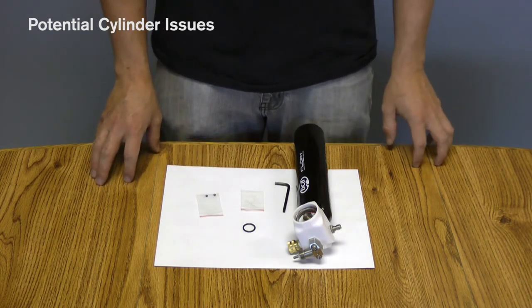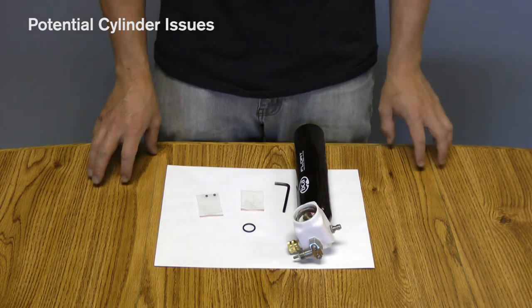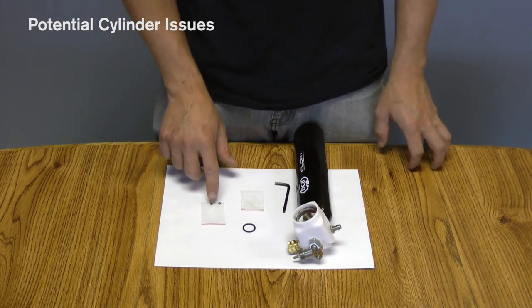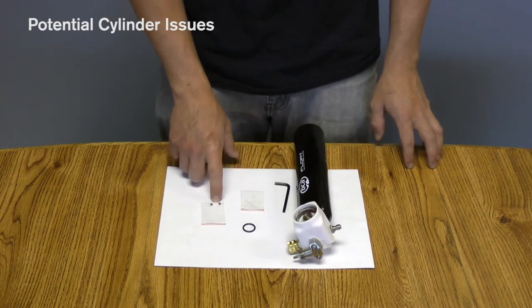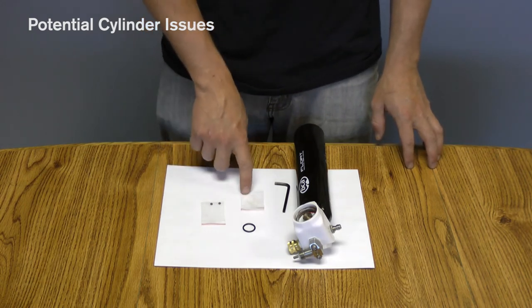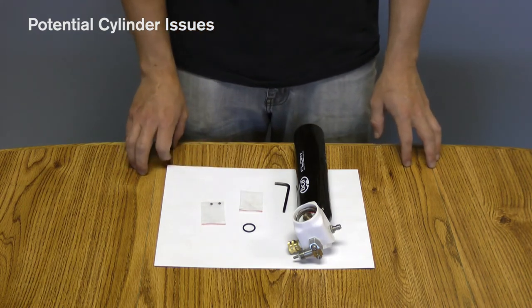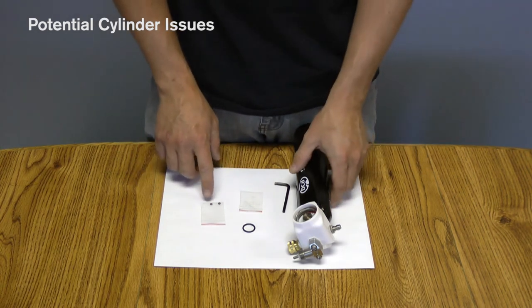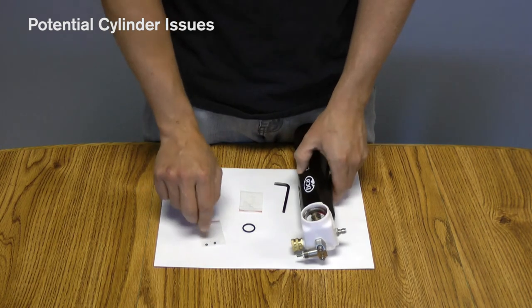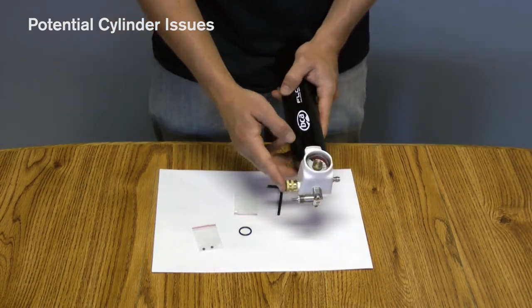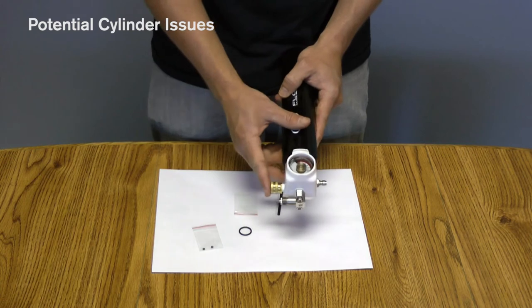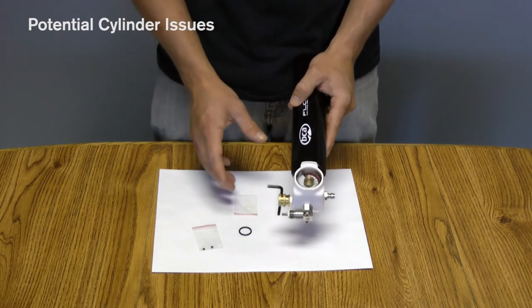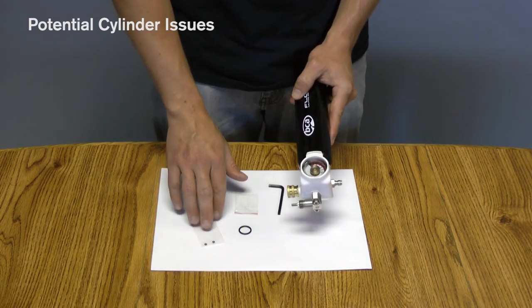So if you do run into some issues with your cylinder as far as leaking goes, you really want to make sure that these O-rings have been replaced recently, that the grease has been applied to it as well. And generally, you'll always know that there's an issue with these smaller O-rings if when you're filling, air comes out of this gold coupler here. So anytime that happens, it's most likely because the O-ring was not replaced.